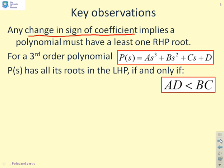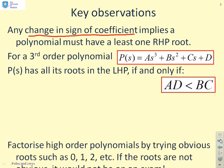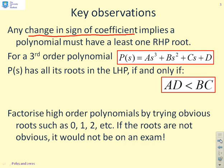If you have a third order polynomial, something like P of s given here, then if AD is less than BC then it's got all the roots in the left half plane, and conversely if AD is bigger than BC there must be at least one right half plane root. And finally, if you have high order polynomials and you're not quite sure where the roots are, then try obvious things like 0, 1, 2 and so on.